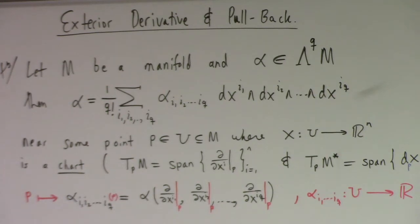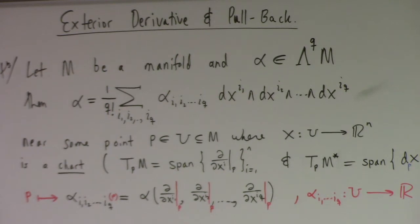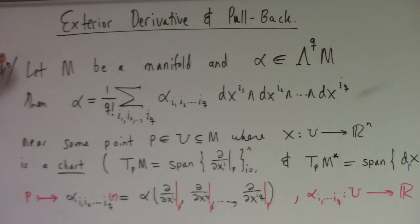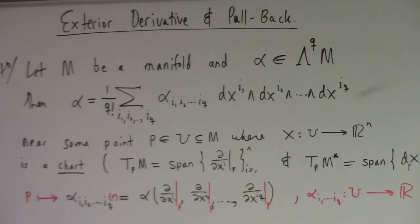So that's the setup. This is what a Q-form over a manifold looks like: functions as coefficients, then wedges of the coordinate differentials. Now, how do we define the exterior derivative?